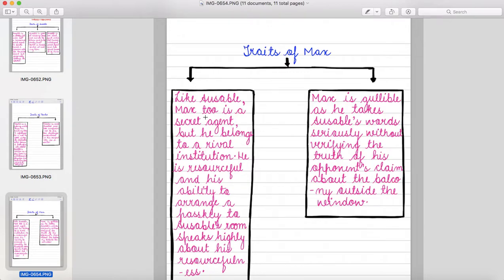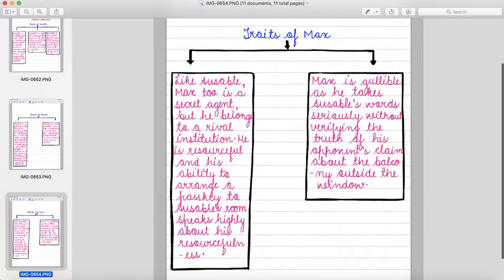Fowler is weak-hearted and too inexperienced to face the challenges encountered in his occupation as a writer. Fowler is also a secret agent, but he belongs to a rival institution. He is resourceful and his ability to arrange a passkey to Ausable's room speaks highly about his resourcefulness.